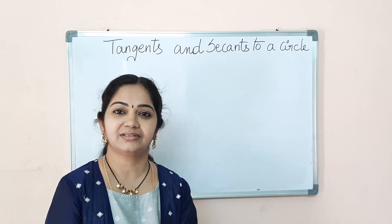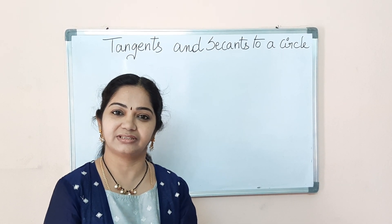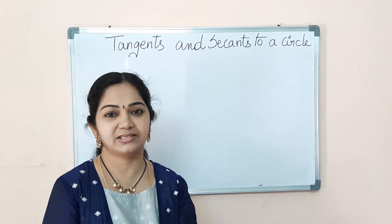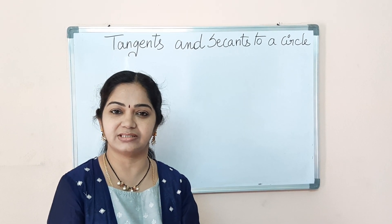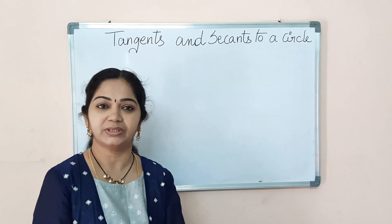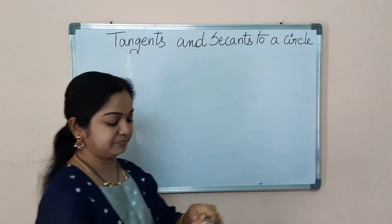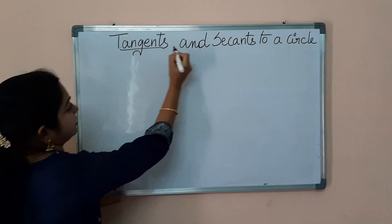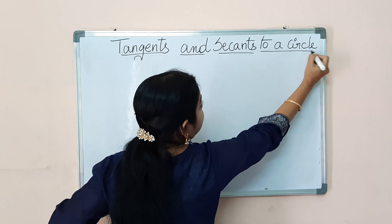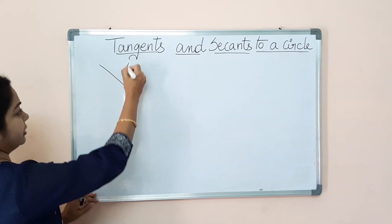Good morning to all. We have successfully completed our trigonometry chapter — hope that you are practicing well at home with the help of the video lessons. Today we'll quickly start with a new chapter in paper 2, that is tangents and secants to a circle, the 9th chapter in paper 2. Observe the board here.